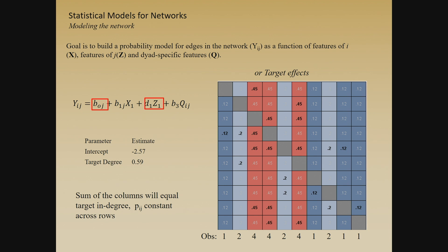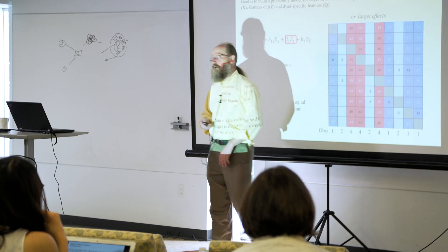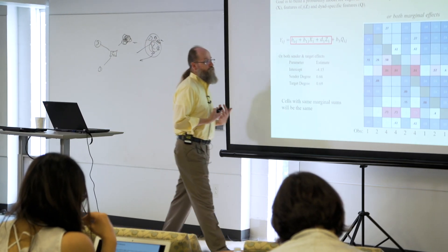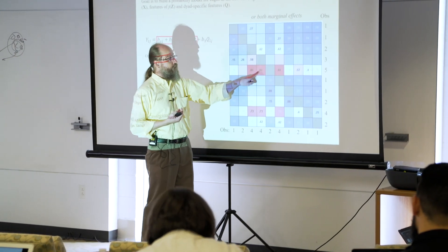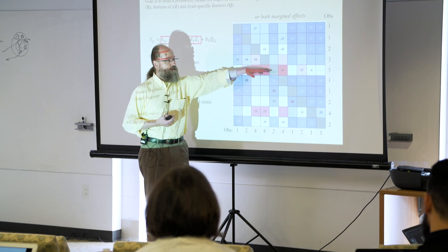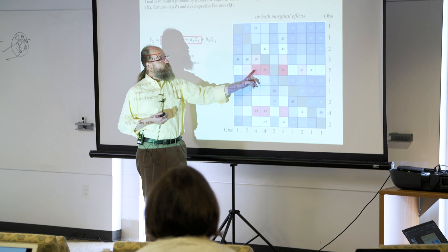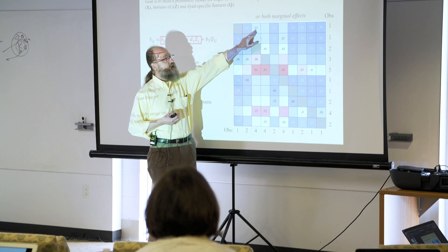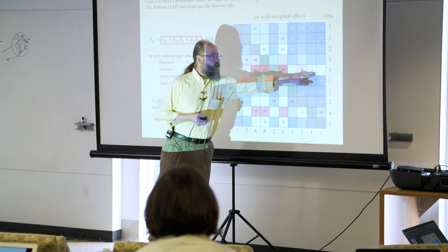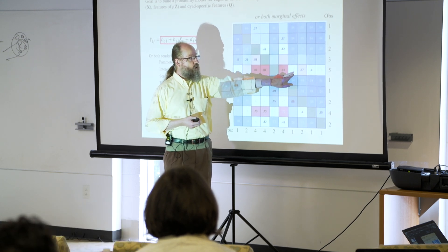I can also add receiver effects — some people receive only one tie, others receive four. With both out-degree and in-degree in the model, you identify nodes with a really high probability of being tied: high row marginal, high column marginal, so the intersection is also high. But the model still misses — predicting a low probability of 0.27 for a tie that actually exists, and about 0.4 in some places where there is no tie.